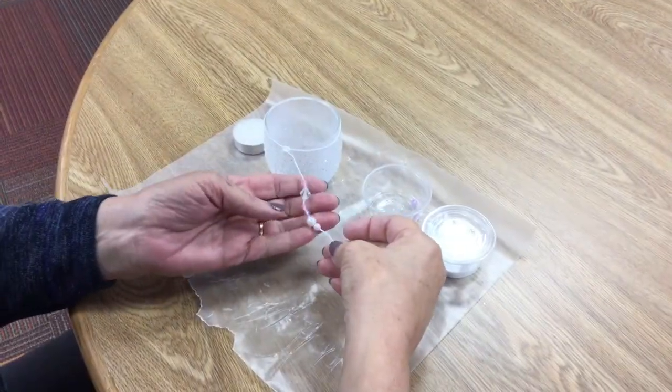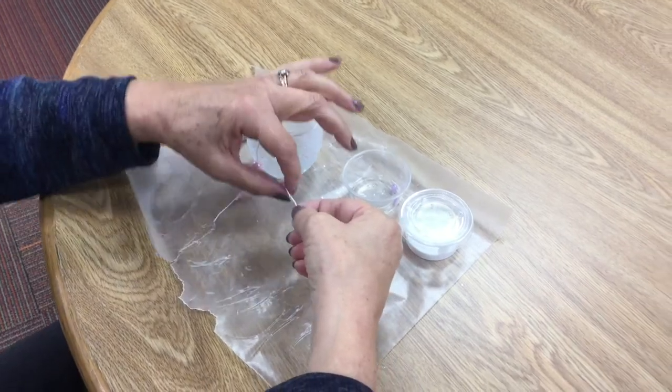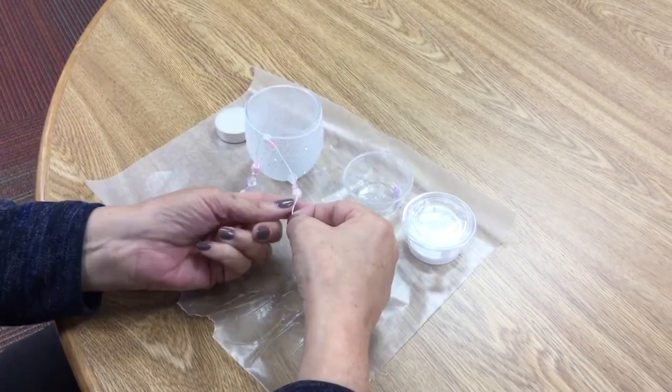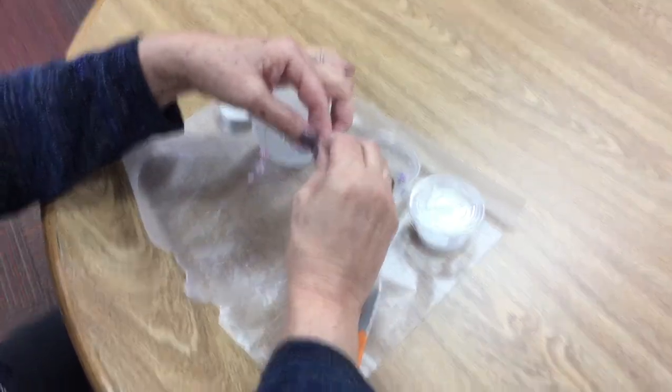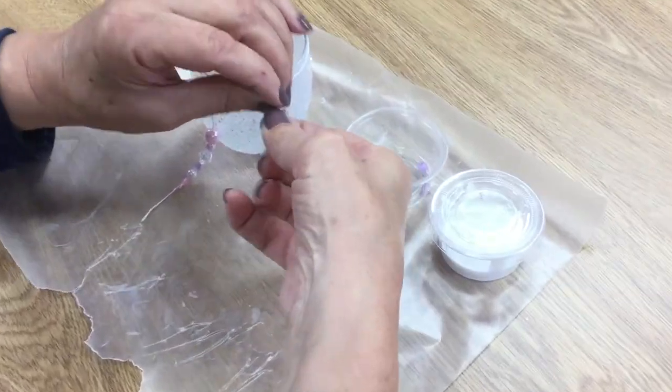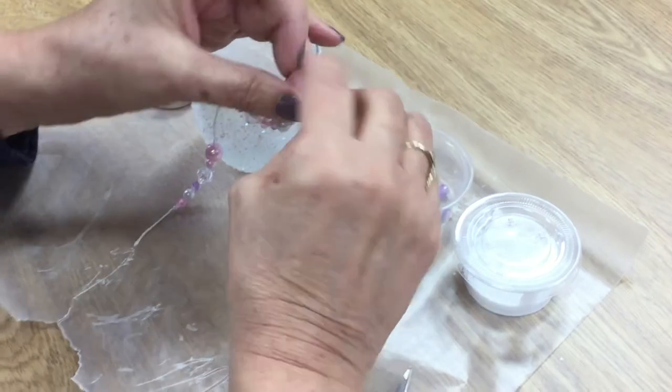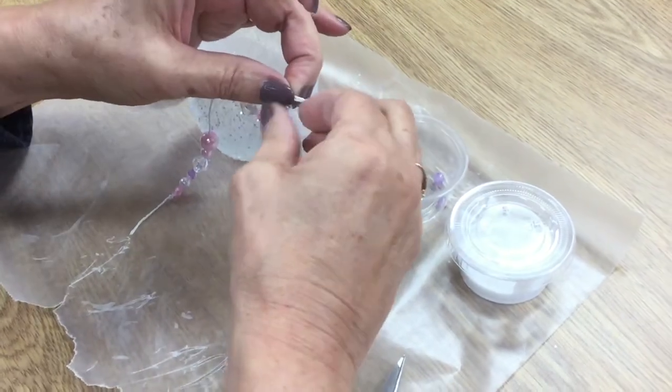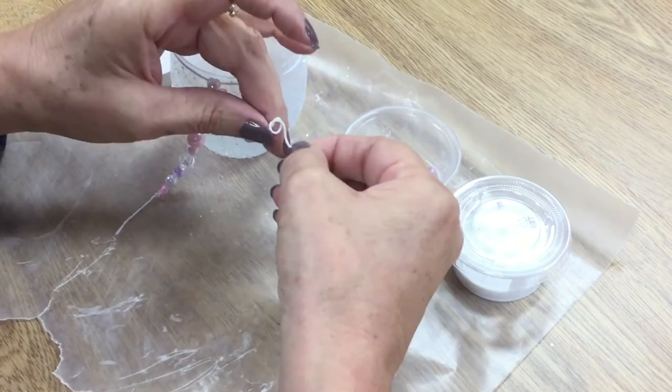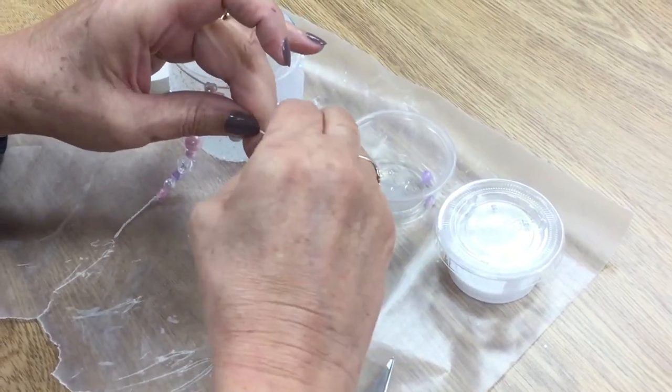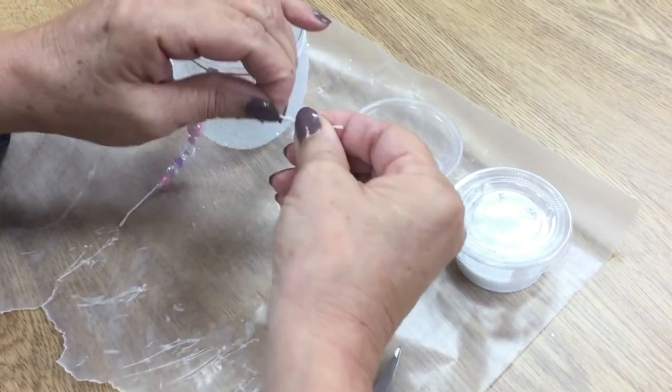Whenever you've got as many beads on there as you'd like—you could put them all the way up if you want—just simply tie a knot at the end so that they stay on. You can make it as long as you want or as short as you want, and then just secure the knot.